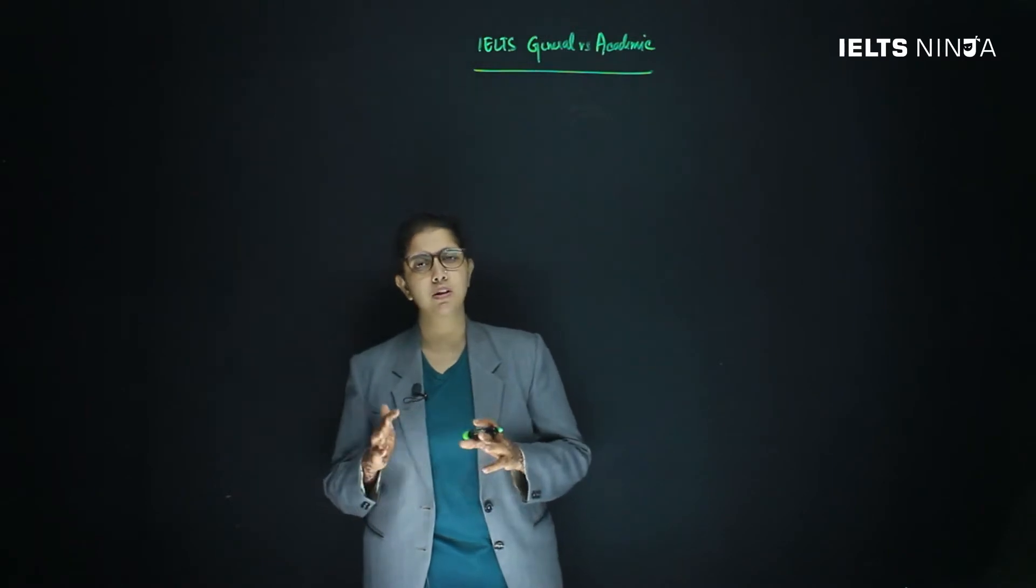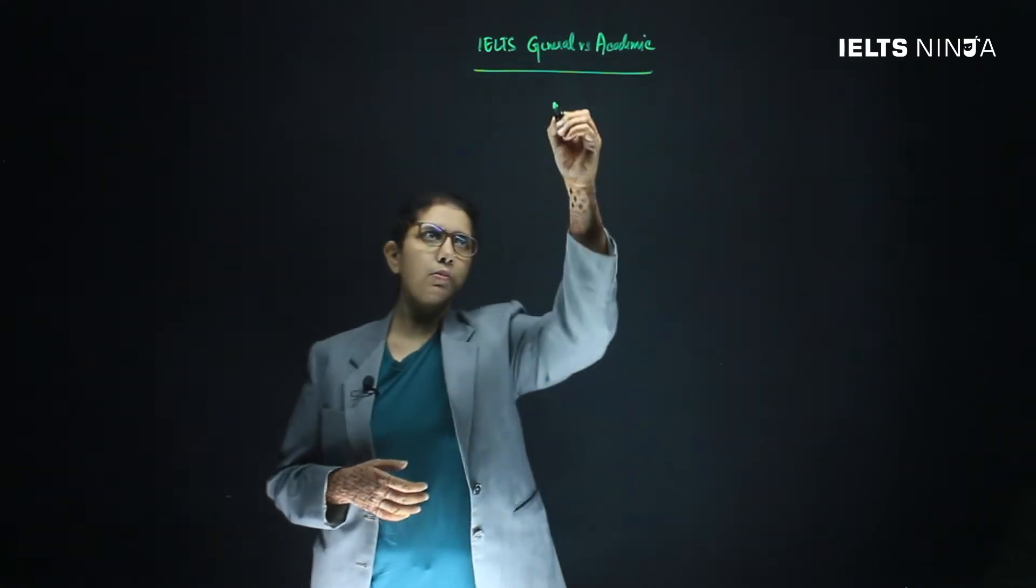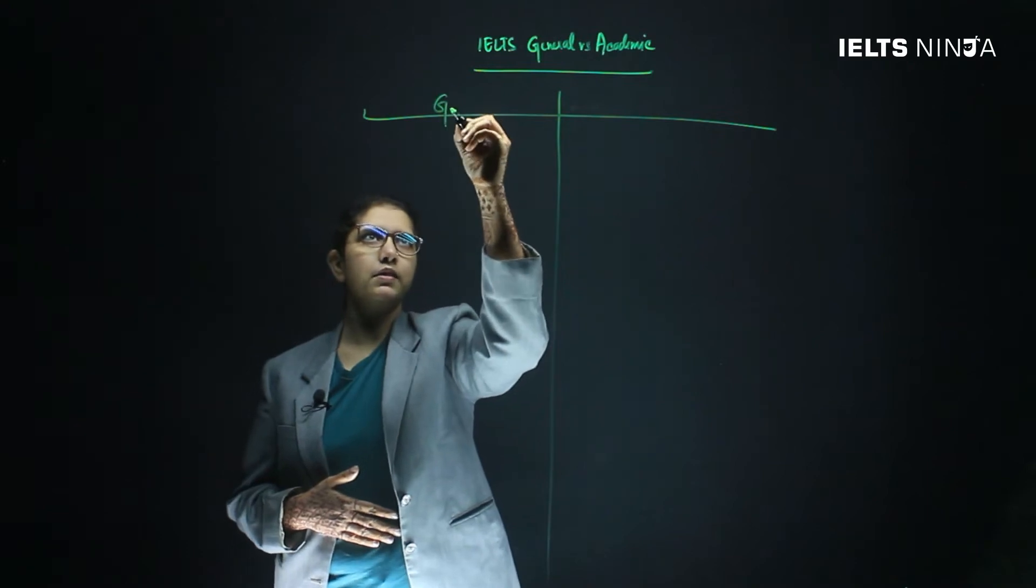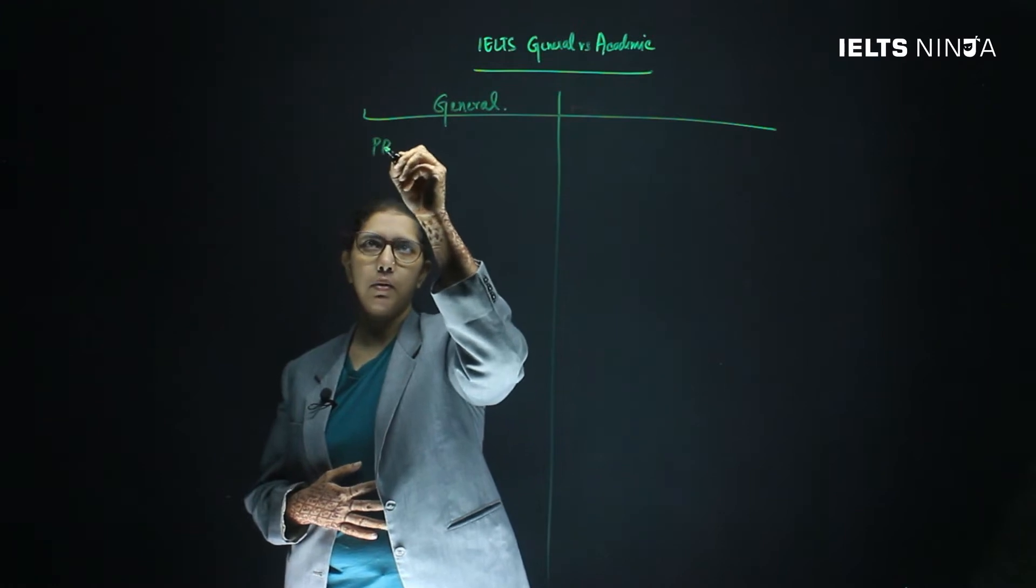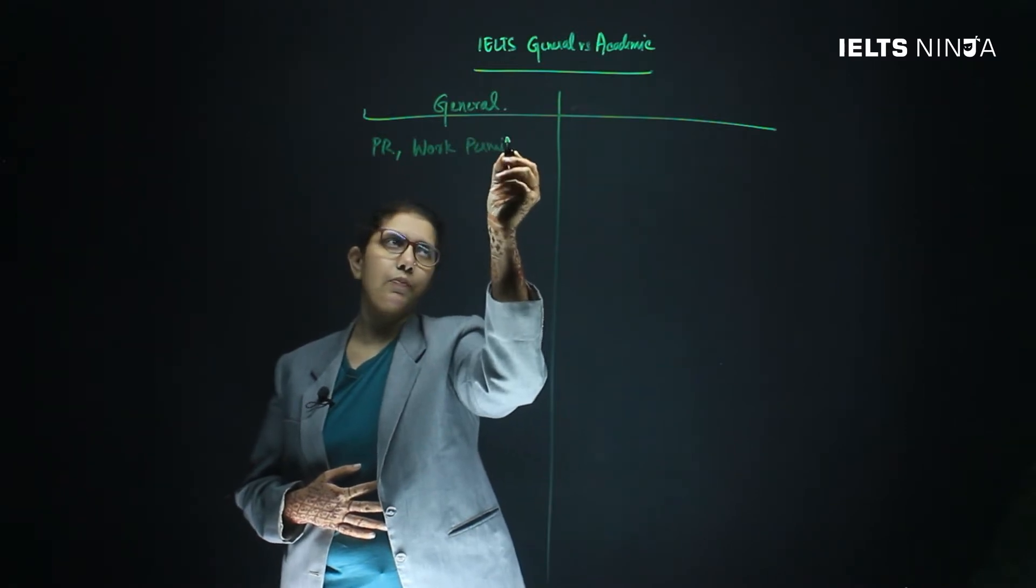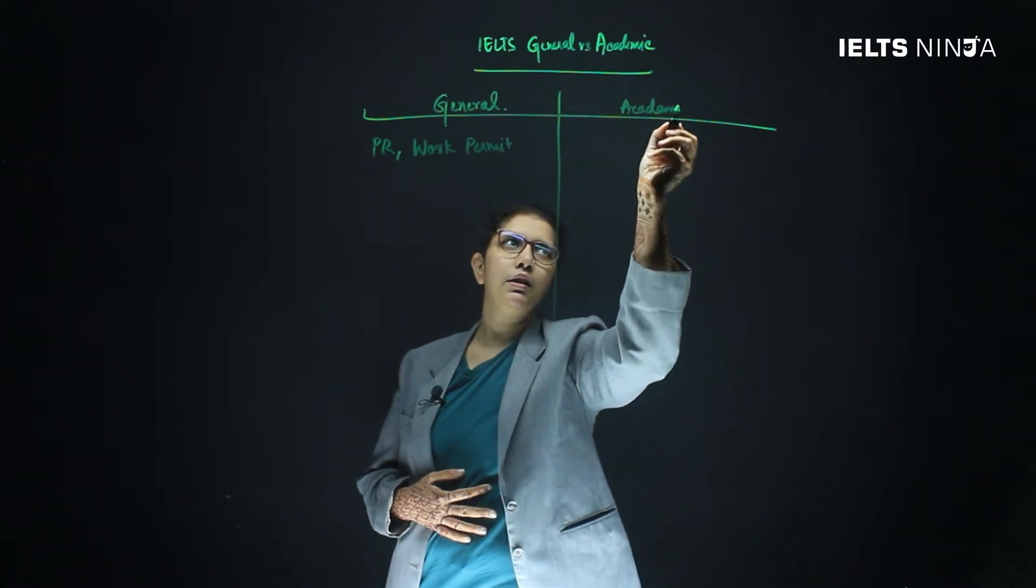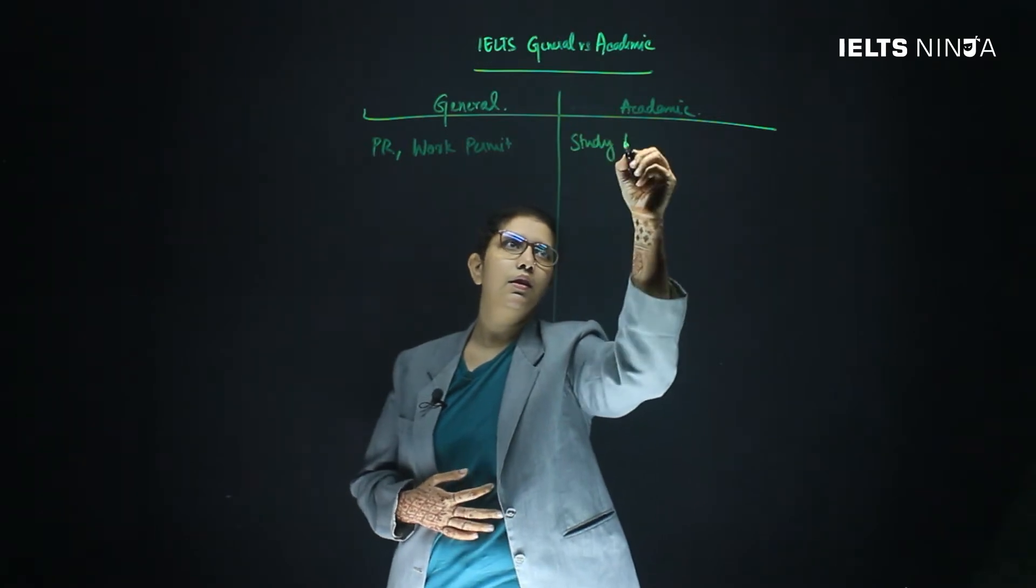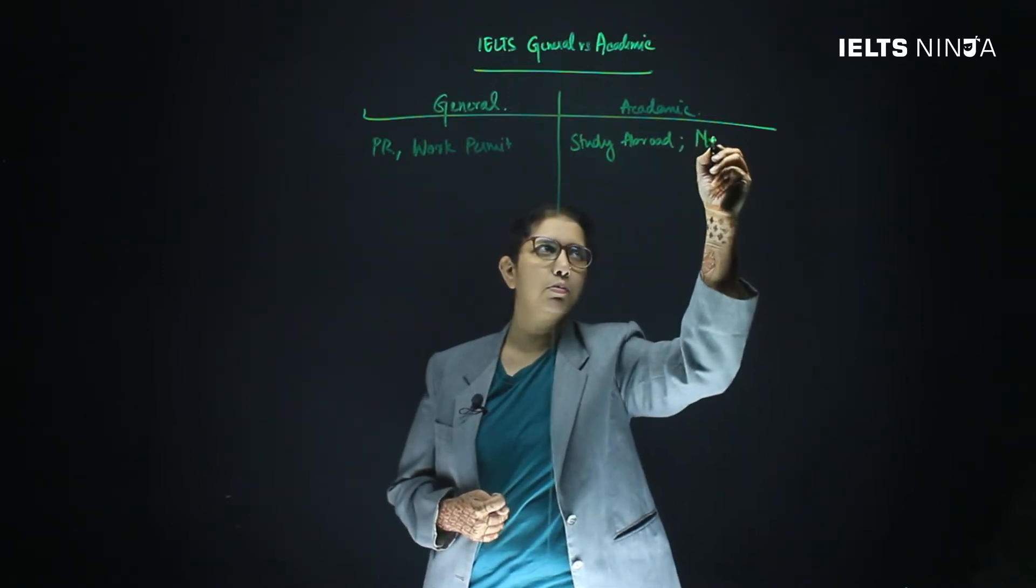Well guys, let us understand what is IELTS general and what is IELTS academic. To make it very simple, IELTS general is the test that is given for people who are applying for their permanent residency or probably work permit abroad. Whereas IELTS academic is given by students who want to study abroad or in some rare occasions by medical professionals.